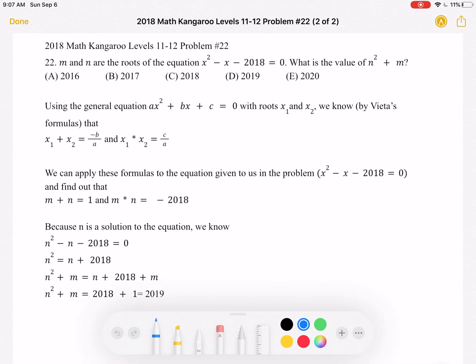Let's start by looking at the general equation ax² + bx + c = 0, with roots x₁ and x₂. We know by Vieta's formulas that the sum of the roots x₁ + x₂ must be equal to negative b over a.